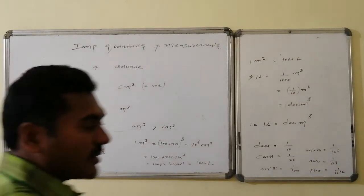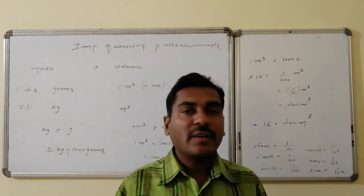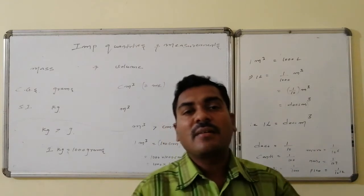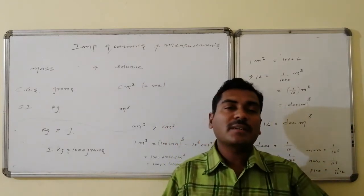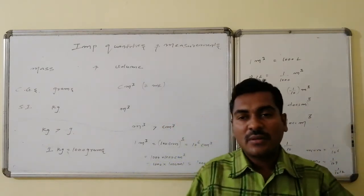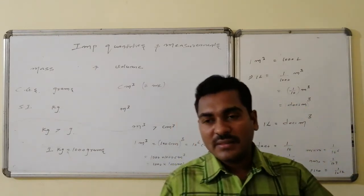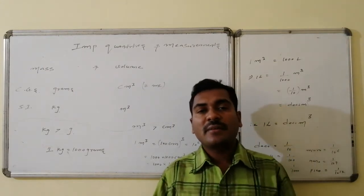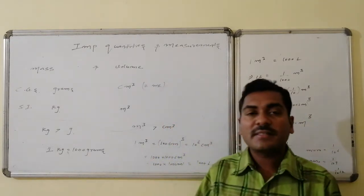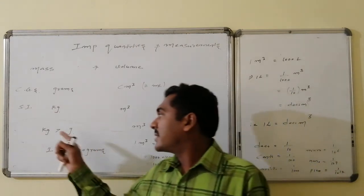Welcome. The important quantities in chemistry and their measurements. Let us look at the definition of matter, which consists of two important things: one is mass and second is volume. Mass is measured in terms of grams as well as kilograms. We have two different systems for measurement of units: one is the CGS system and second is the SI system. In the CGS system the unit of mass is grams, whereas in the SI system the unit is kilograms.